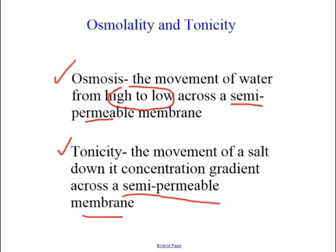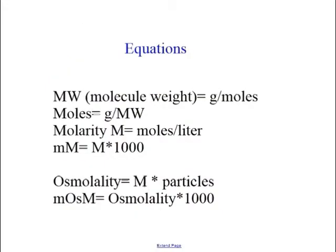Those are our definitions to start with. Now let's do some math—I don't think you'll have a lot of math on an IV exam, but it helps you understand what's going on. This should be reviewed from chemistry last year or two years ago. First, molecular weight: molecular weight means the number of grams you have for every mole, and you can find that by looking at the periodic table. For example, the molecular weight of carbon—element number six—should be 12, meaning 12 grams for every one mole of carbon.